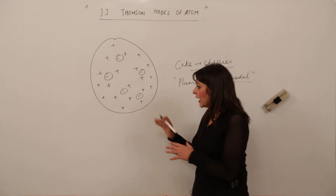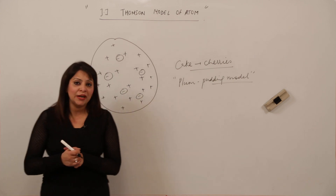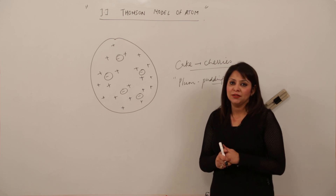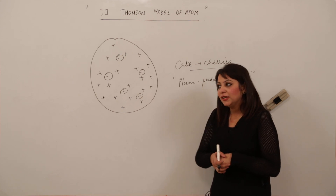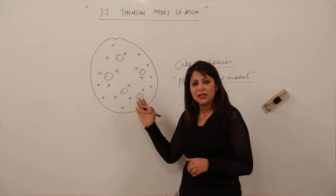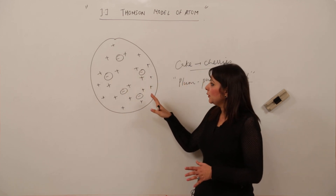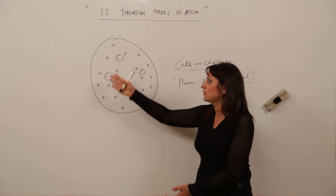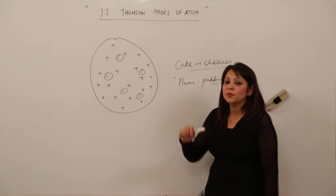A striking question about this model is: opposite charges attract each other — positive attracts negative. So how is it possible that so many positive charges are present and yet couldn't attract the fewer negative charges scattered throughout the sphere? This seems impossible, because they would have been neutralized by the huge positive charge. This was the main limitation of J.J. Thomson's model.